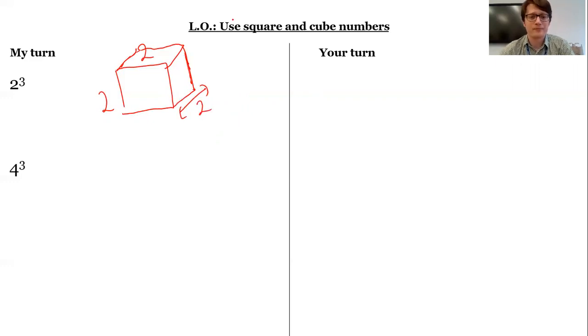So now I'm timesing two times two times two. I've got three lots of two. It's not two times three. It's three lots of that number. So two times two is four times two is eight.